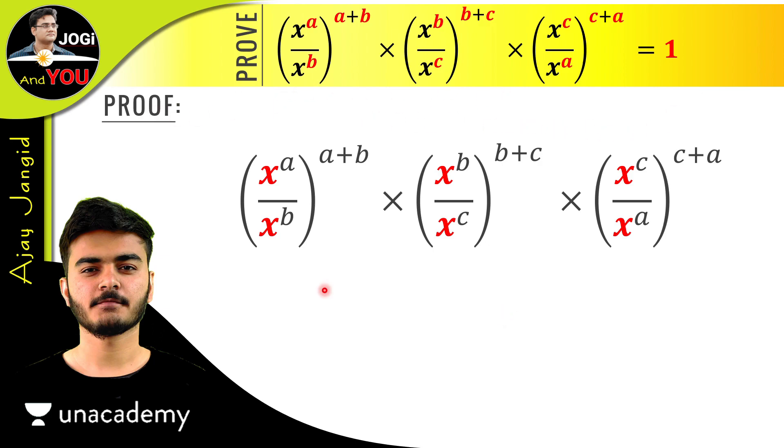So for proving this, we have this question here. Now just analyze this question. See what we have in brackets in the first term. We have x^a and x^b, both in division.